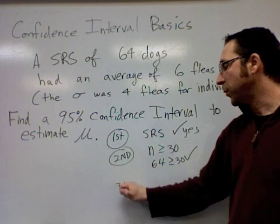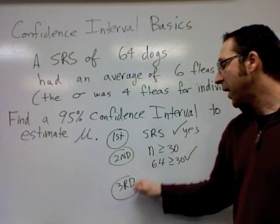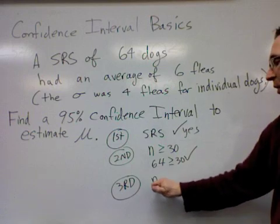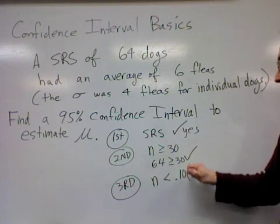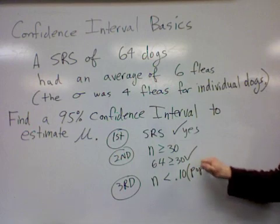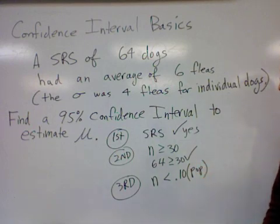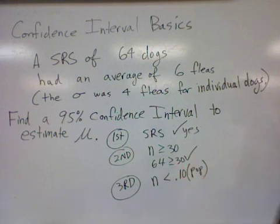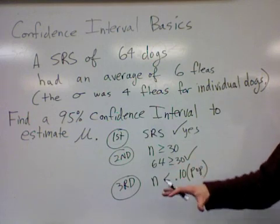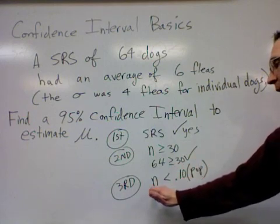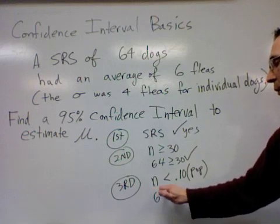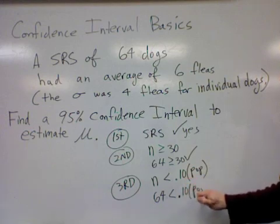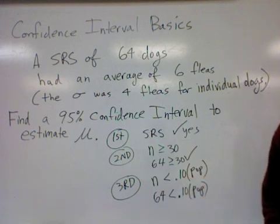And then the third condition, which is a little bit odd, is that we have to make sure that our sample is not too big. Our sample size should be less than 10% of the population, and that's something that's easily met in most sampling situations. In this case here, definitely 64 dogs is way less than 10% of the entire population of all dogs.